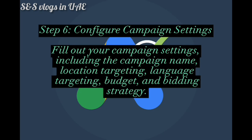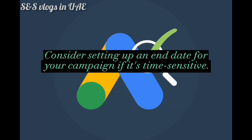Step 6: Configure campaign settings. Fill out your campaign settings, including the campaign name, location targeting, language targeting, budget, and bidding strategy. Also consider setting up an end date for your campaign if it's time sensitive.